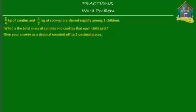Welcome to homecampus.com.sg. Let's solve this word problem. It says that three-fourths of a kilogram of candies and six-sevenths of a kilogram of cookies are shared equally among three children. What is the total mass of candies and cookies that each child gets? Give your answer as a decimal rounded off to two decimal places.